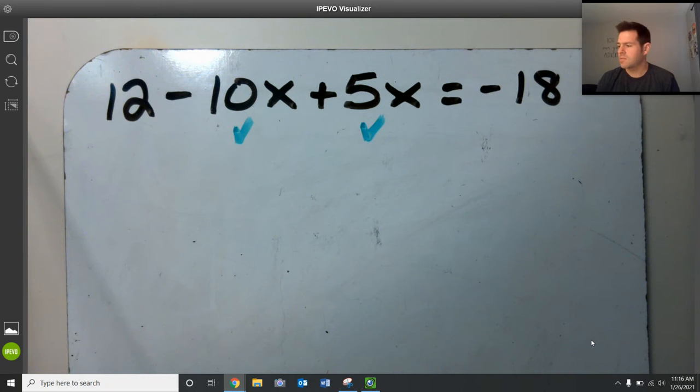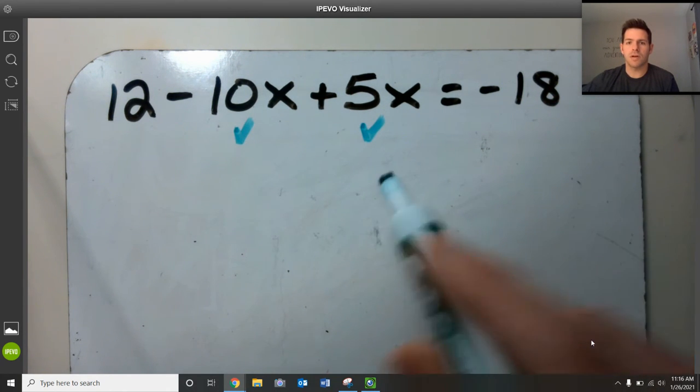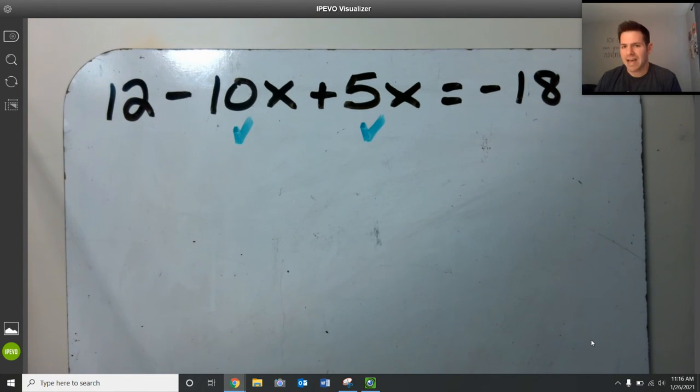When I combine like terms, I'm not taking this right here and moving it to the other side of the equation. It's still going to be on the left side. So because it's going to be on the left side, I'm doing exactly what it is it's telling me to do. No inverse operation here, doing exactly the way it's telling you to do.